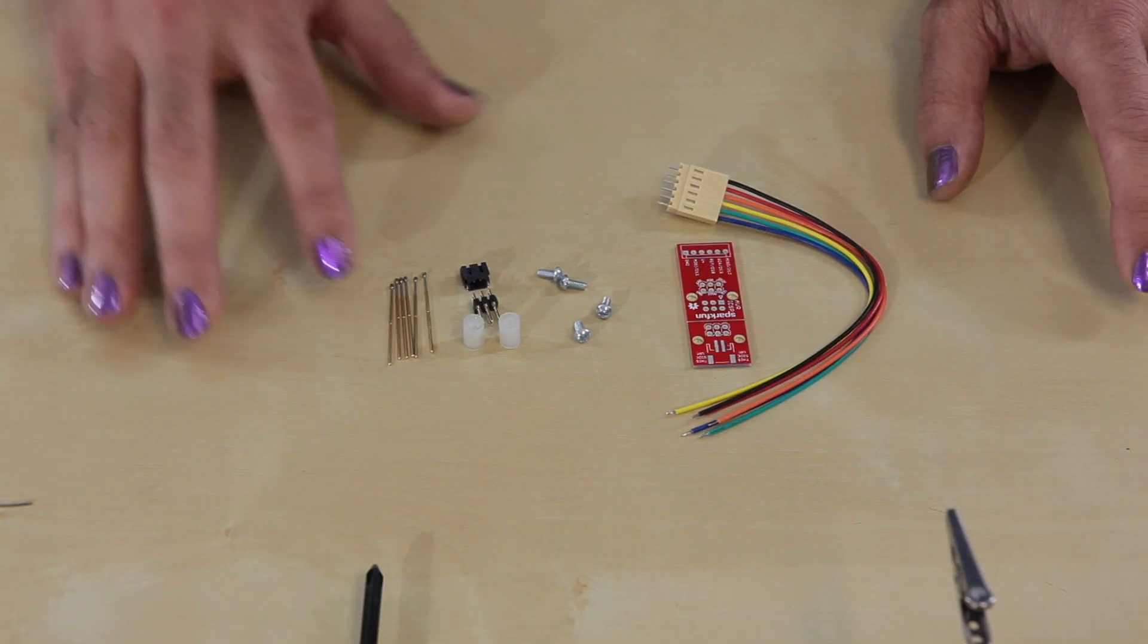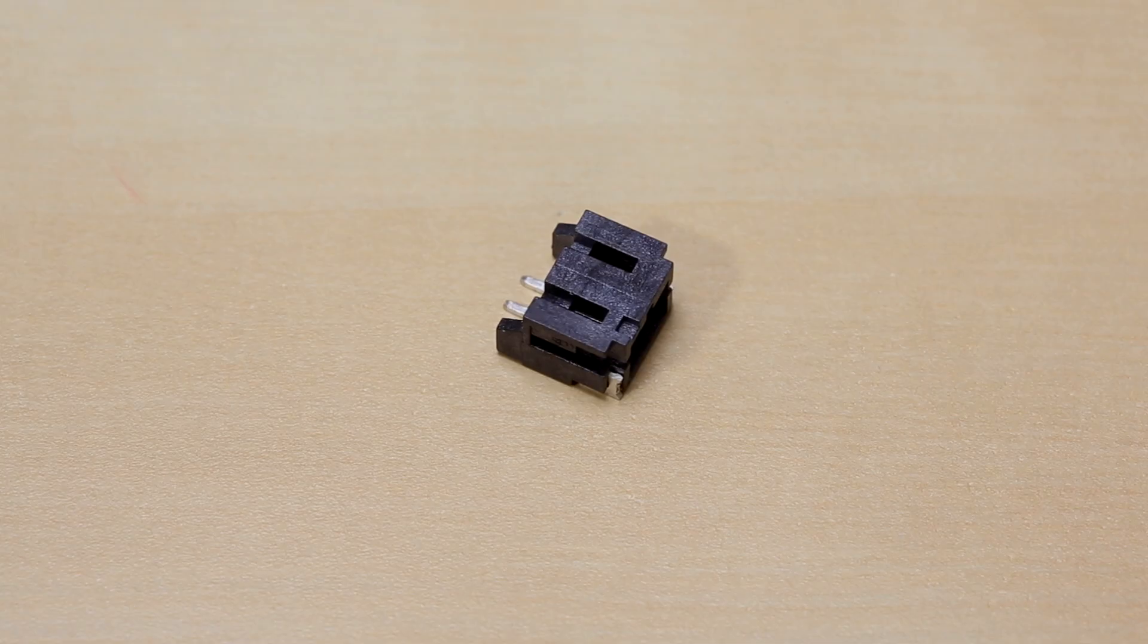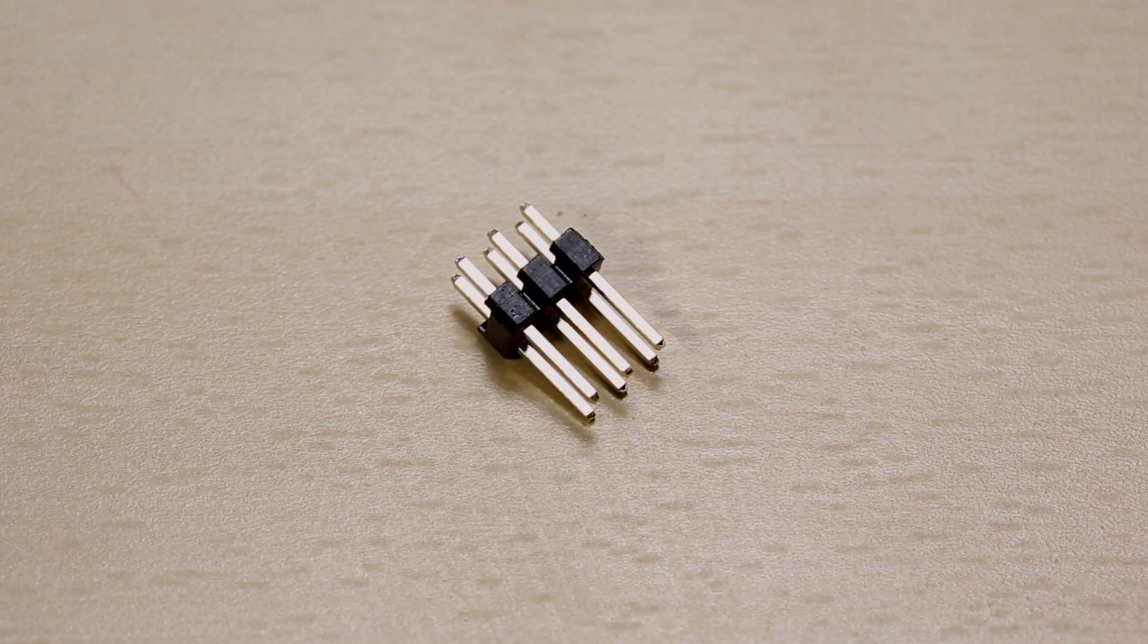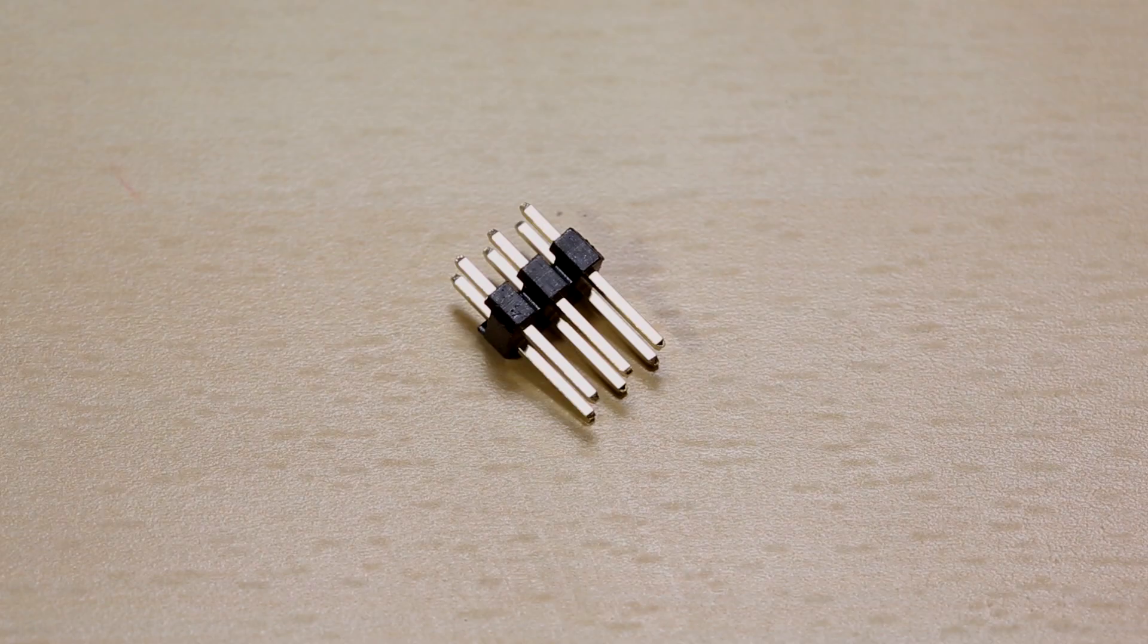So inside the kit we've got six Pogo pins, a little surface mount JST adapter. Don't worry, surface mount soldering for this kit is really easy. A dual row three by two programming header.